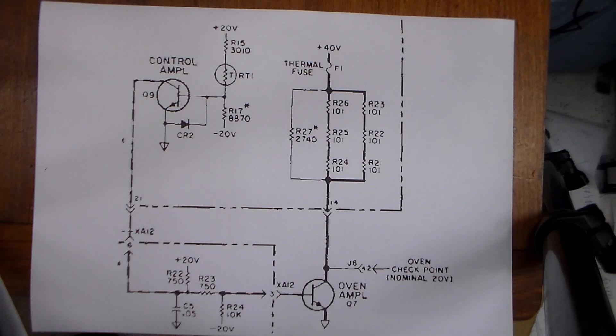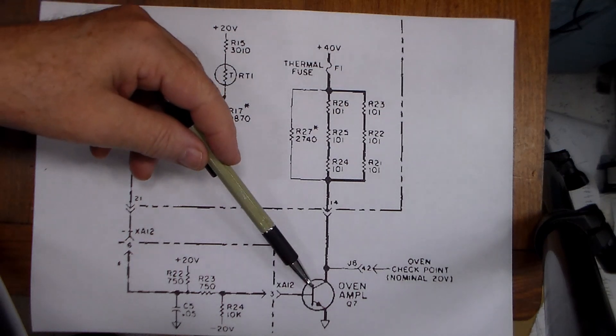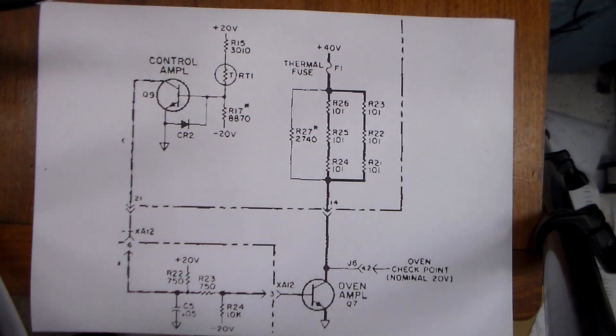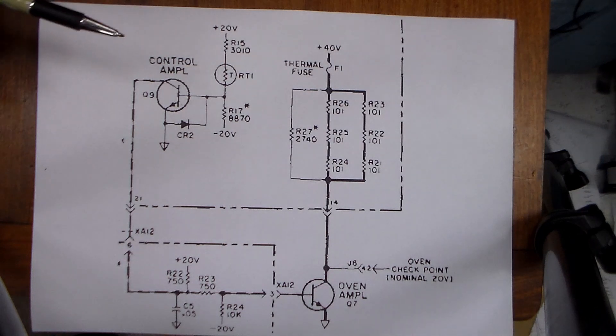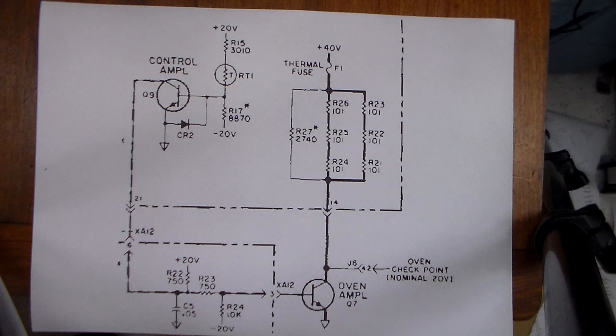What they also included in this was a linear operation of this transistor. So, rather than just being on or off, at a very narrow band of temperatures, basically around about plus and minus 0.2 of a degree C around the set point temperature, this circuit goes into a linear region of operation.